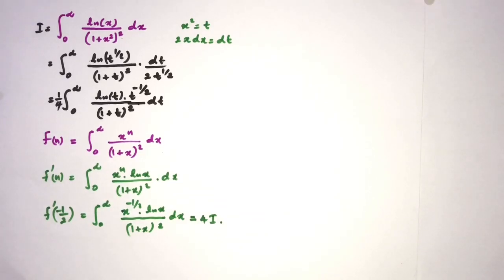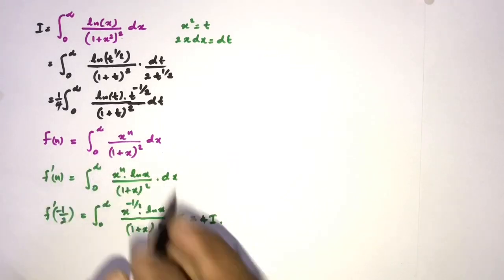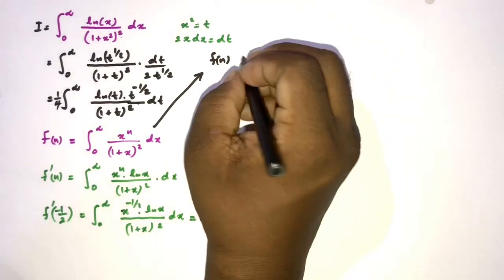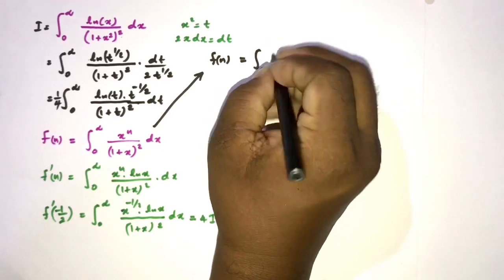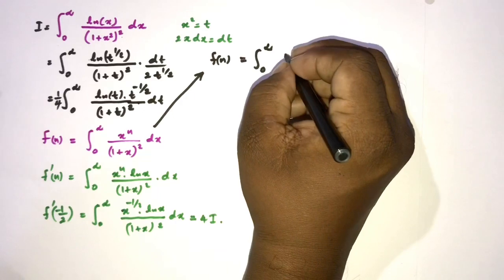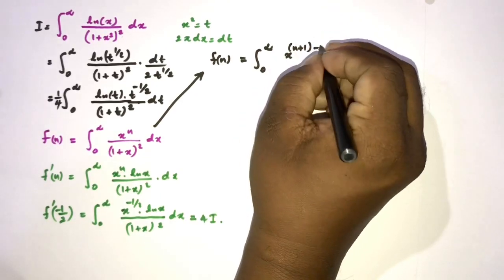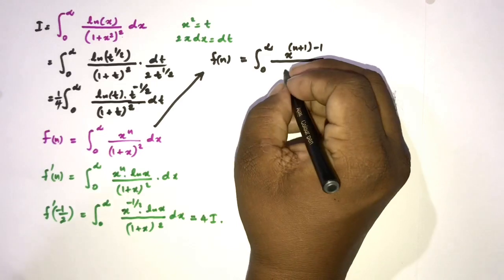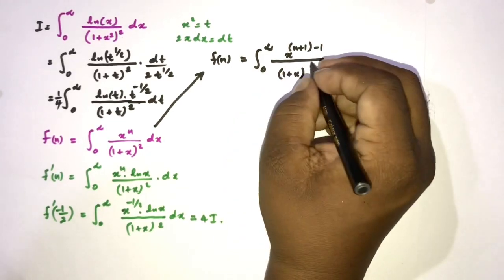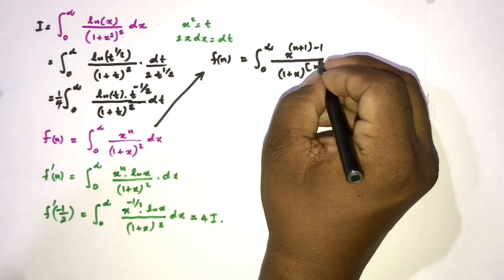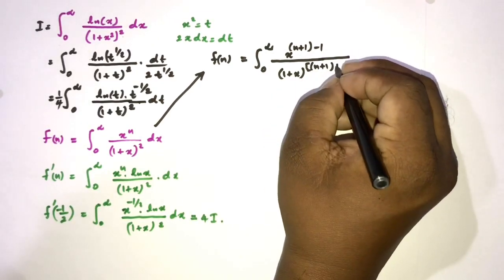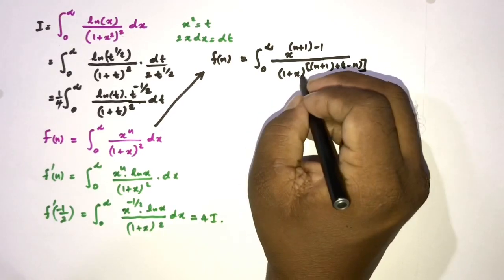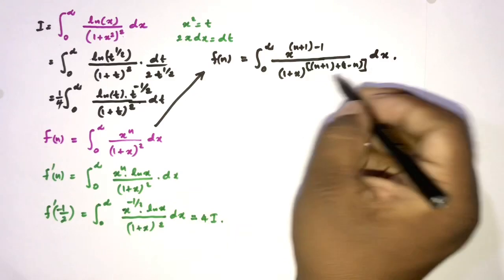To find f(n), I rewrite the integrand by writing x to the n plus 1 minus 1 in the exponent, so that in the denominator we have 1 plus x to the n plus 1, times x to the 1 minus n, giving us 1 plus x squared after simplification.